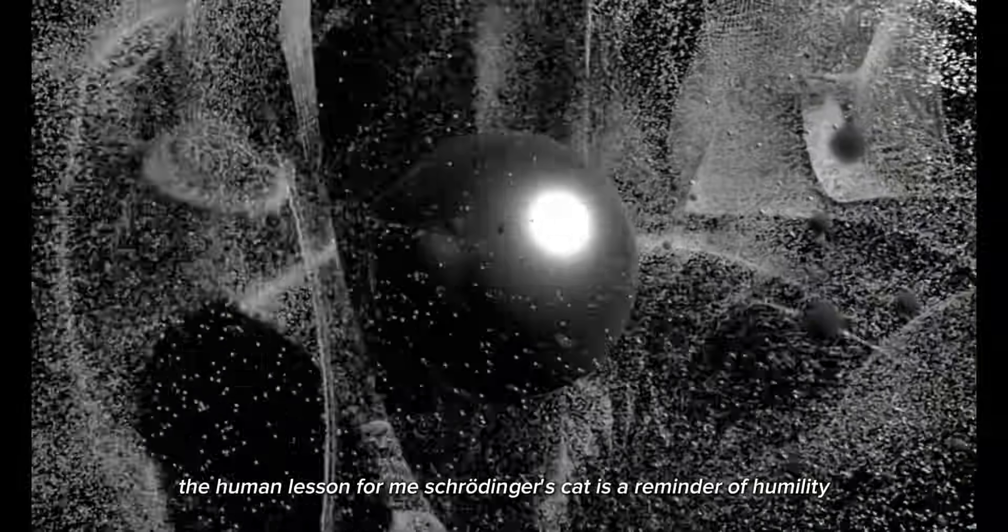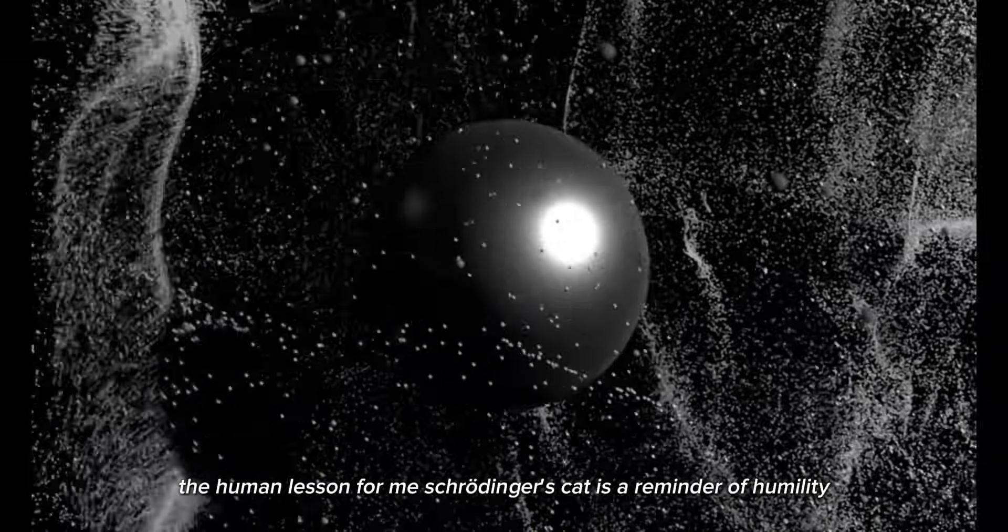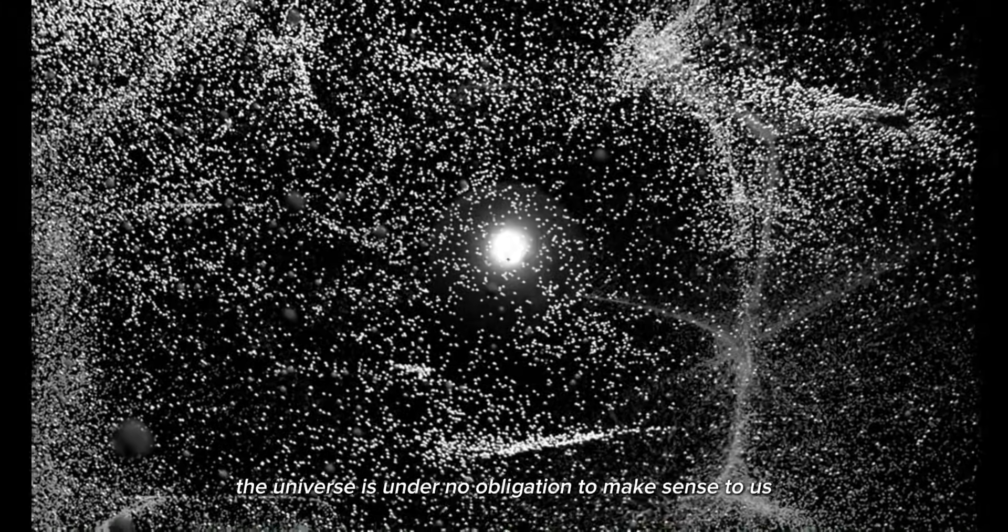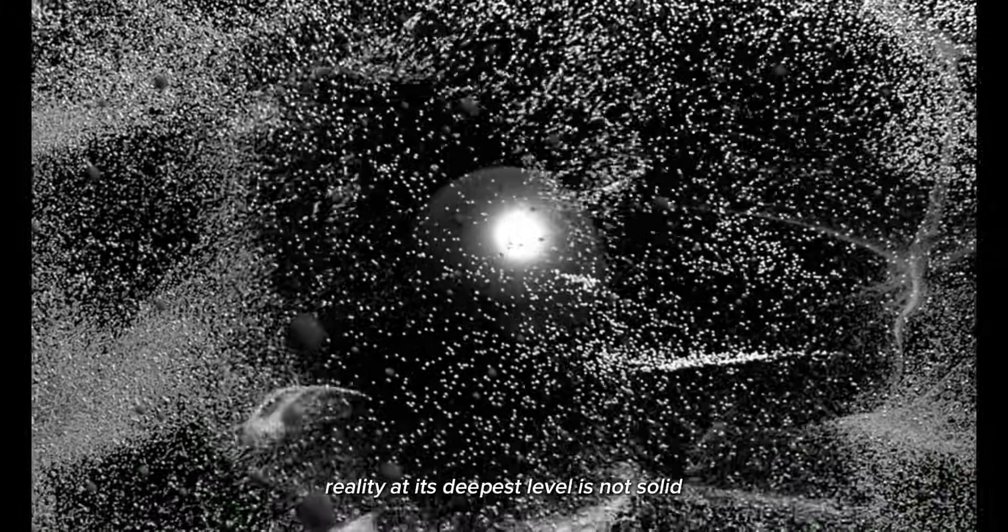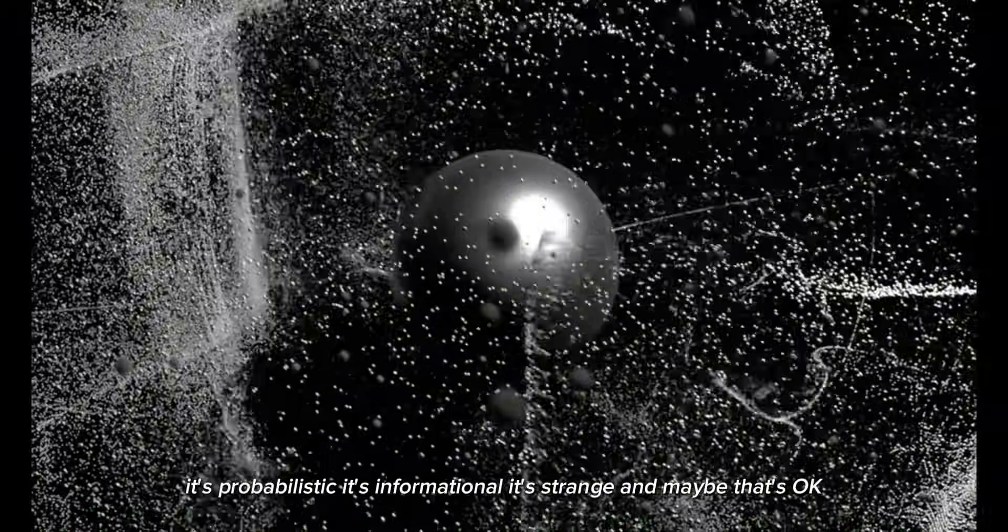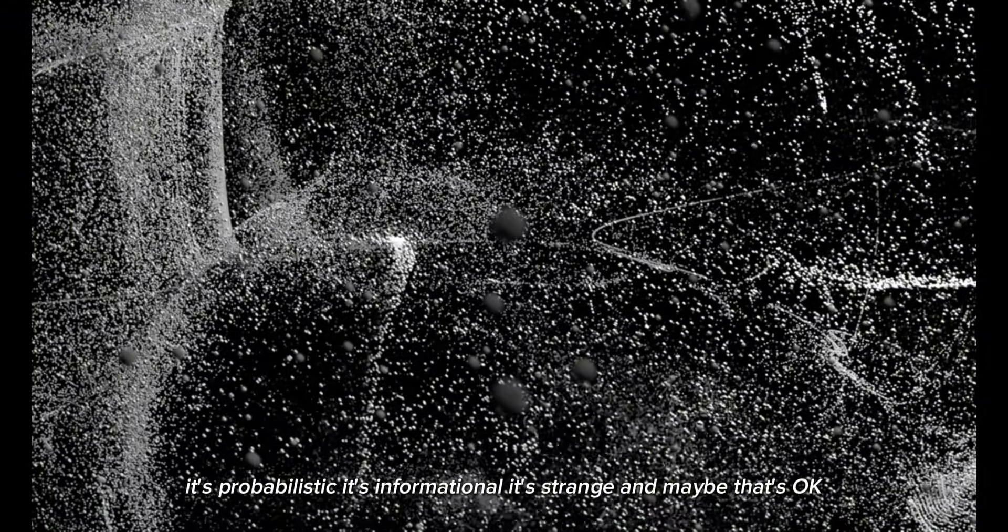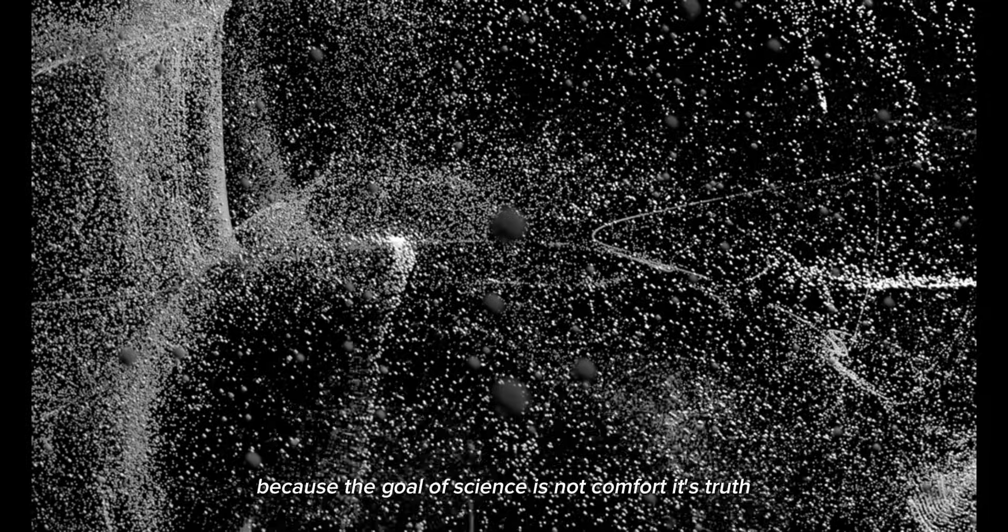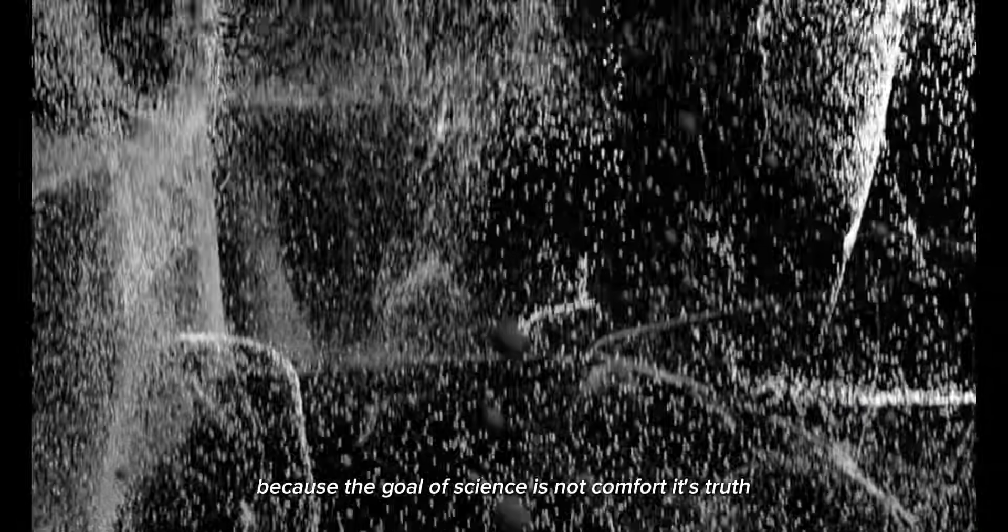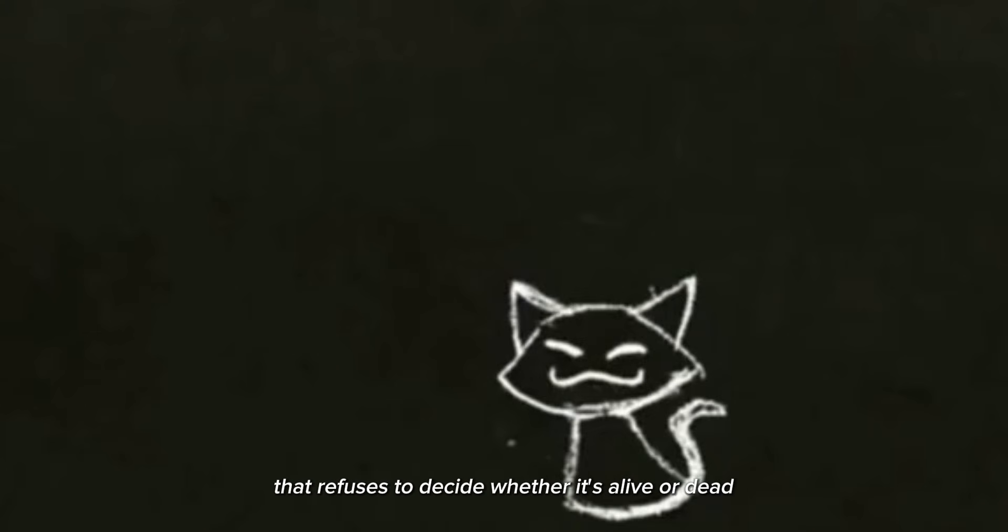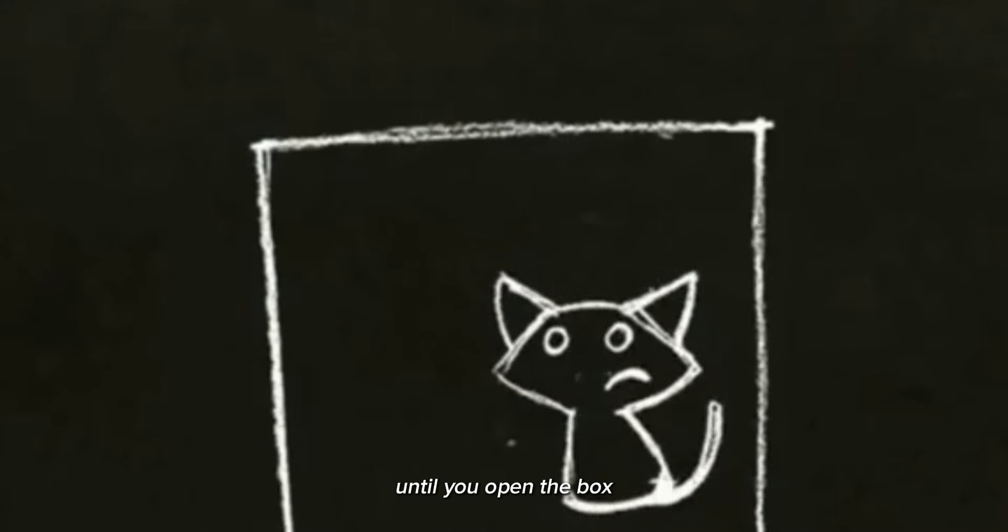The human lesson, for me, Schrödinger's cat is a reminder of humility. The universe is under no obligation to make sense to us. Reality, at its deepest level, is not solid. It's probabilistic. It's informational. It's strange. And maybe that's okay. Because the goal of science is not comfort. It's truth. And sometimes, truth looks like a cat that refuses to decide whether it's alive or dead until you open the box.